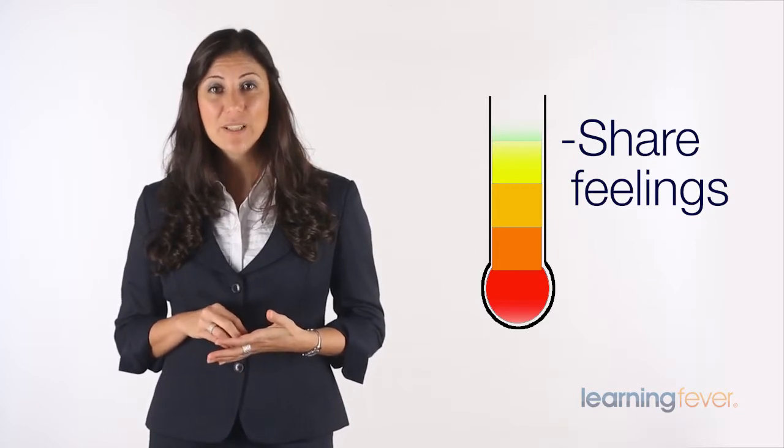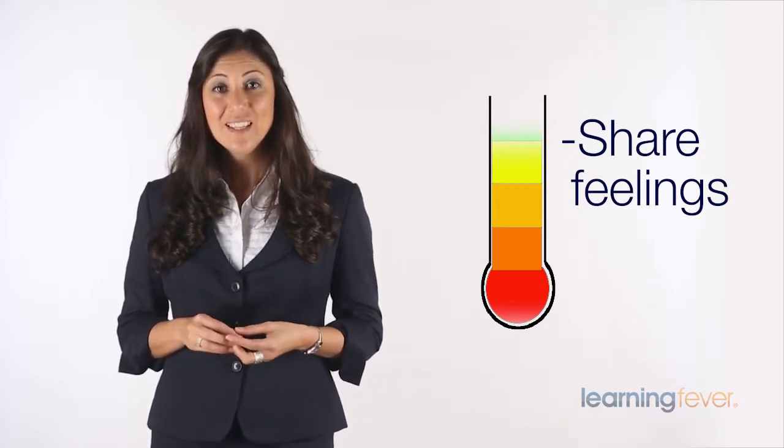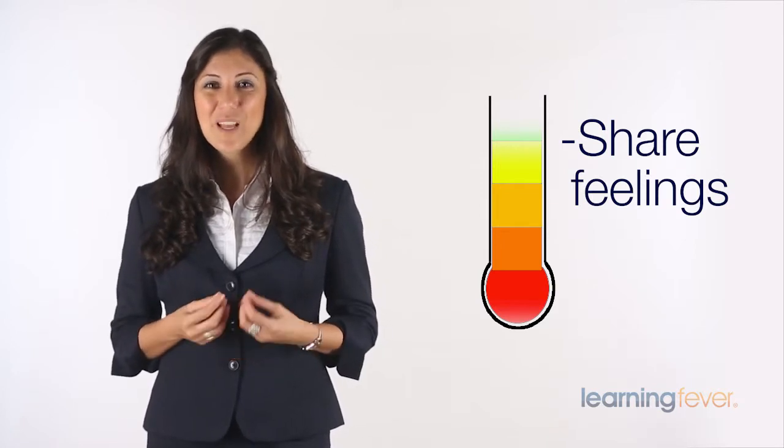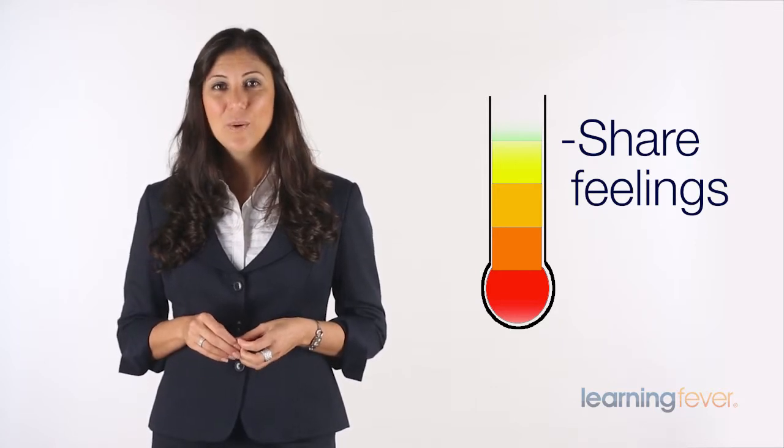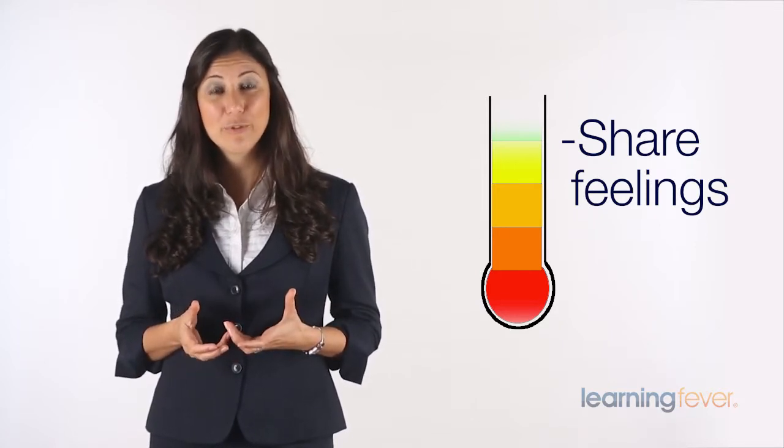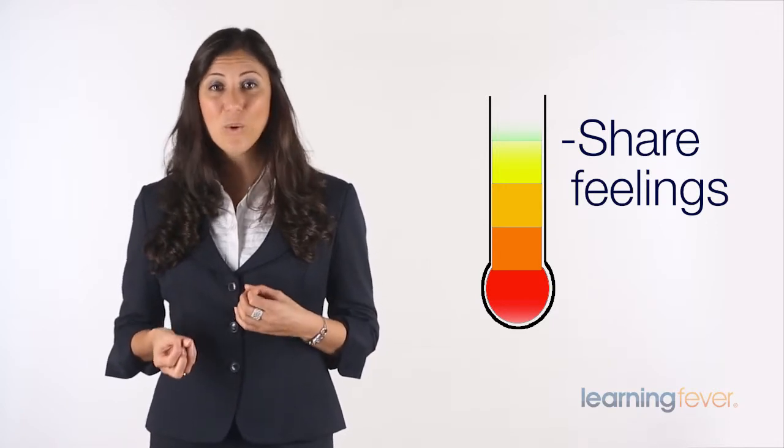At the fourth level, we're really getting to a deeper level of intimacy, and this is where we share our feelings. So you're beginning to let others know who you really are. For example, I feel loved when you call me during the day to see how I am. Or it hurts me when I don't hear from you all day. So the feelings can be pleasant or unpleasant.